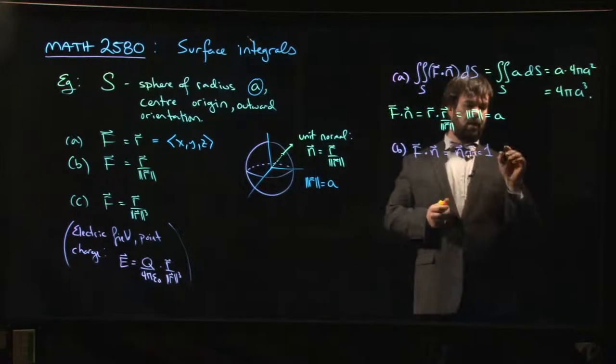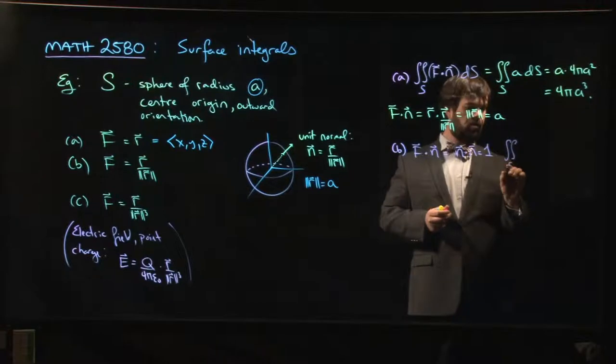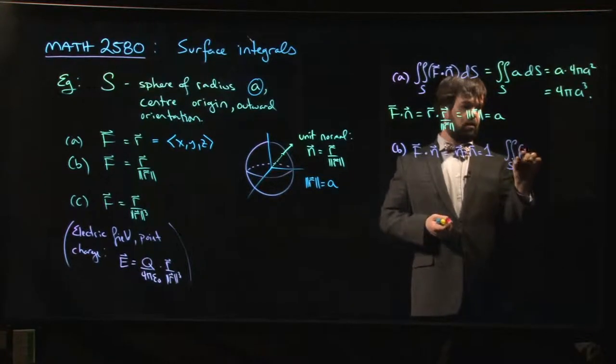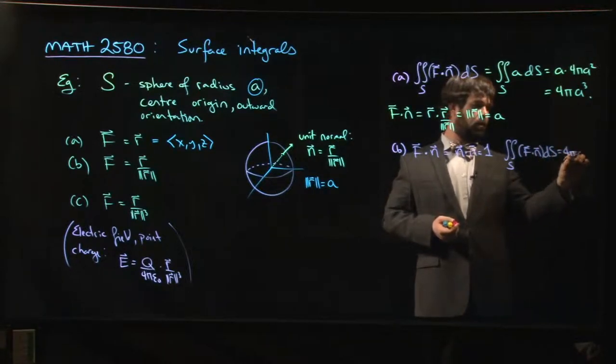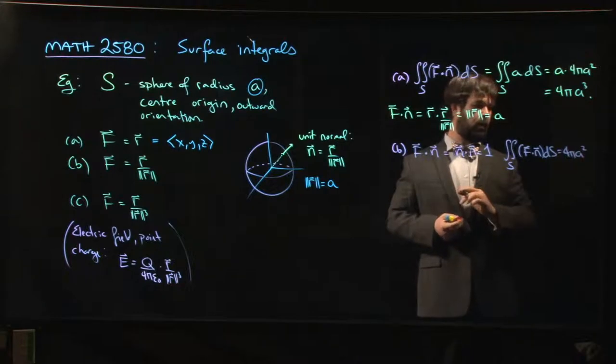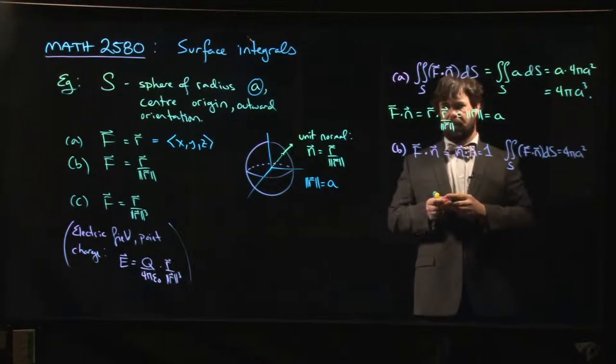So we're integrating 1. The integral in this case is just the area of the sphere, 4 pi A squared. Simple enough.